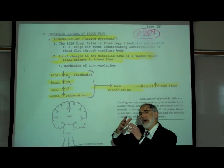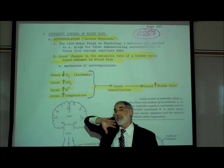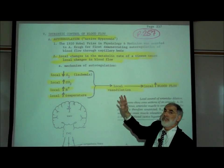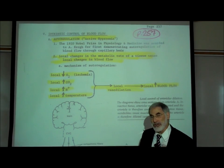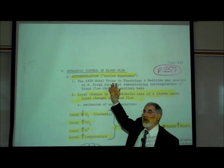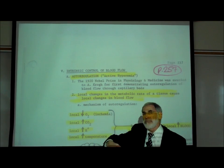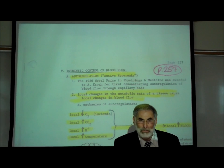And again, this is symmetrical. If any of these four things go in the reverse direction, that will cause a corresponding local vasoconstriction and a reduction in blood flow. This phenomenon is known as auto-regulation or active hyperemia. Hyperemia literally means increased blood flow, increased blood flow to that tissue.